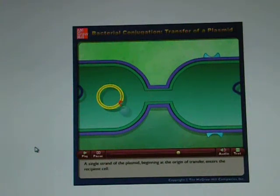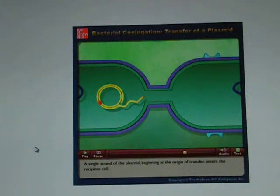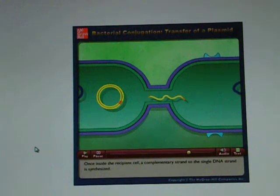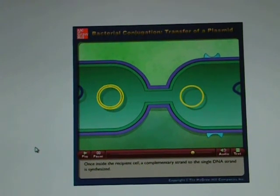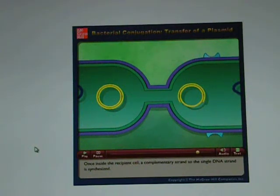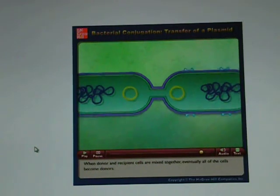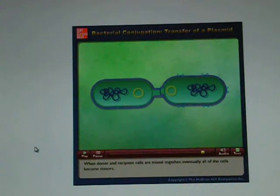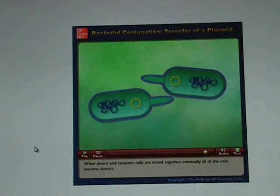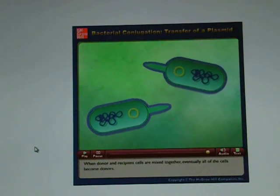A single strand of the plasmid, beginning at the origin of transfer, enters the recipient cell. Once inside, a complementary strand to the single DNA strand is synthesized. When donor and recipient cells are mixed together, eventually all of the cells become donors.